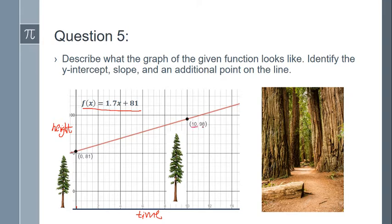So if I plug in a 10, where did this point come from? I made it up. I picked a value for x. In this case, I picked 10. And I plugged it in for the x. So then when I worked that out, I got the answer or the y value of 98. Because 1.7 times 10 is 17. And then you would add that to 81. And 17 plus 81 is 98.